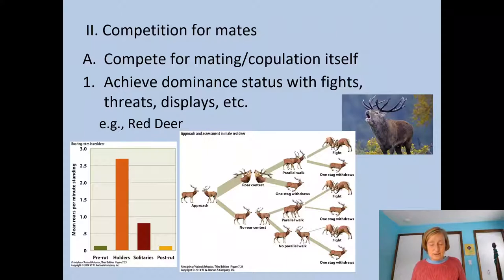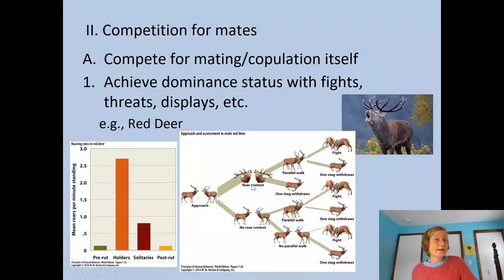The defender of the harem has essentially full mating rights with all of the females in the group. The solitary males have very few opportunities to mate. So what happens? They use what I would call honest indicators of fighting ability. Two males will approach each other — a holder and a solitary male — and they'll begin a roaring contest. One of the stags could then withdraw, or they could engage in various threat displays, doing this weird parallel walk. At that point, one might decide to leave, or a fight could ensue.